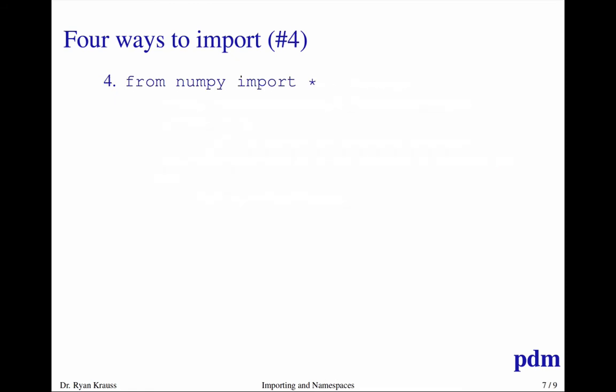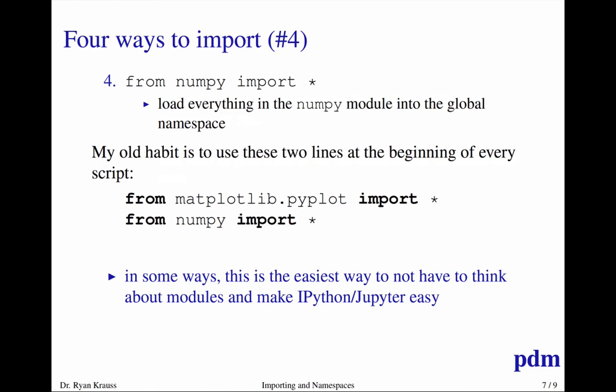The fourth way is just to say from NumPy import star. That means take everything that's in the NumPy module and put it in the global namespace. So that gets me pi and arange and whatever, but absolutely everything that's in there is now in the global namespace. I used to do this when I was teaching Python at first. The advantage is that, I mean, this was kind of my old habit, was to put those two lines at the top of the code. It's the easiest way to try to just not think about namespaces and not think about importing and just get started. And so you can just create figures and you can plot things and you can create sine waves and you have pi and arange and all those things.